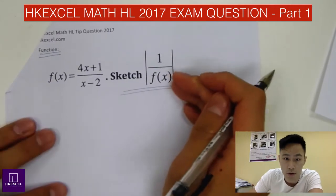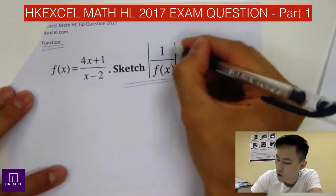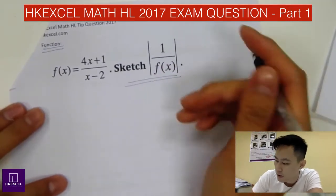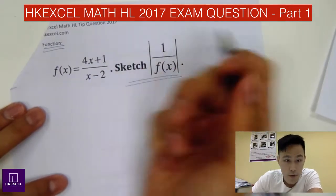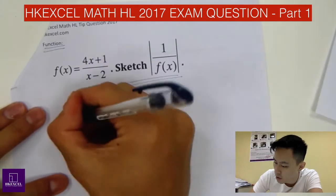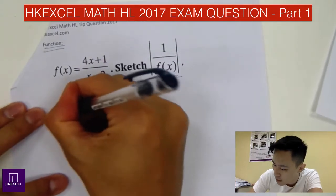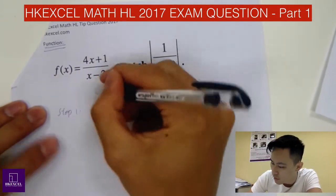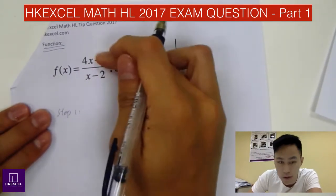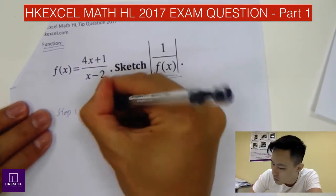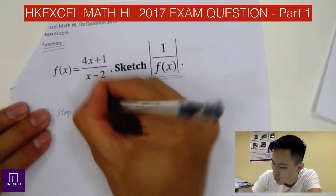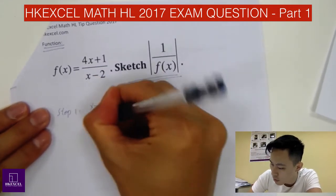This involves an absolute sign. For 1/f(x), you have to flip it over first. Step 1: flip the equation. 1 divided by f(x) will be equal to (x - 2) / (4x + 1).